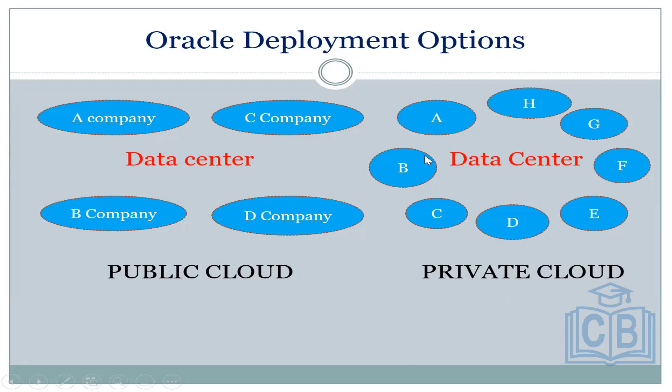In private cloud, when Company A, Company B, Company C are there, Company A cannot see Company B's data. It's just like WhatsApp information — I cannot see your WhatsApp information and you cannot see my WhatsApp information. So both are similar in terms of data isolation.